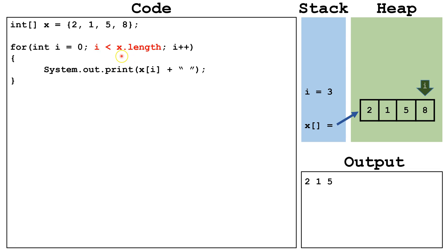We check is 3 less than the length of x, which is 4, so that's true. We print out x index 3, which is the number 8, and then a space. We increment i to 4.